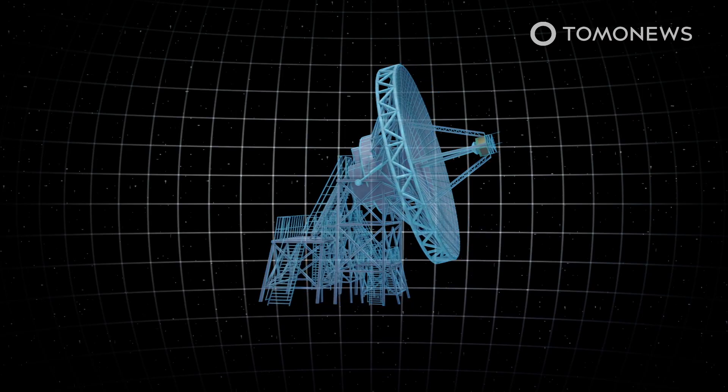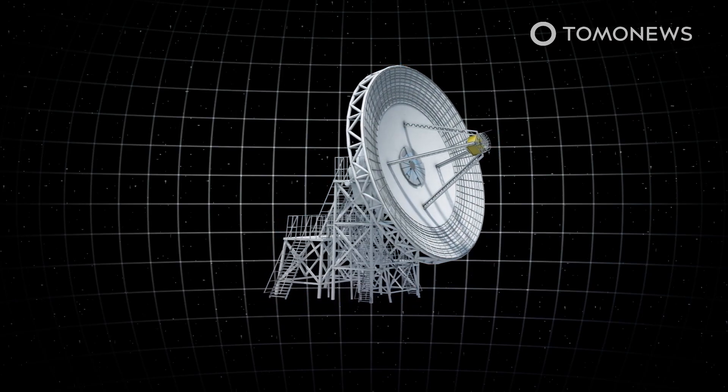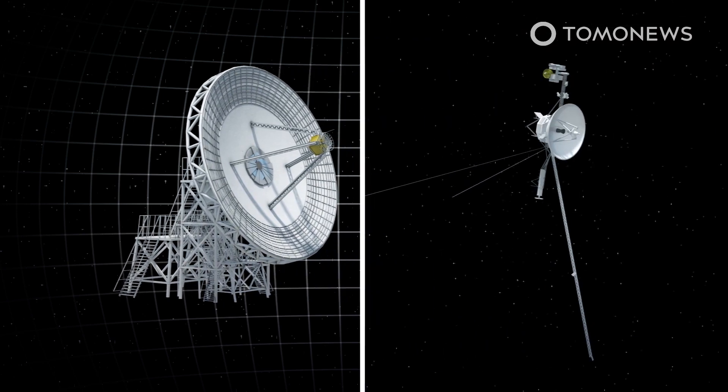NASA has announced that it is building a new satellite dish as part of the Deep Space Network that would be able to communicate with faraway robotic spacecrafts.